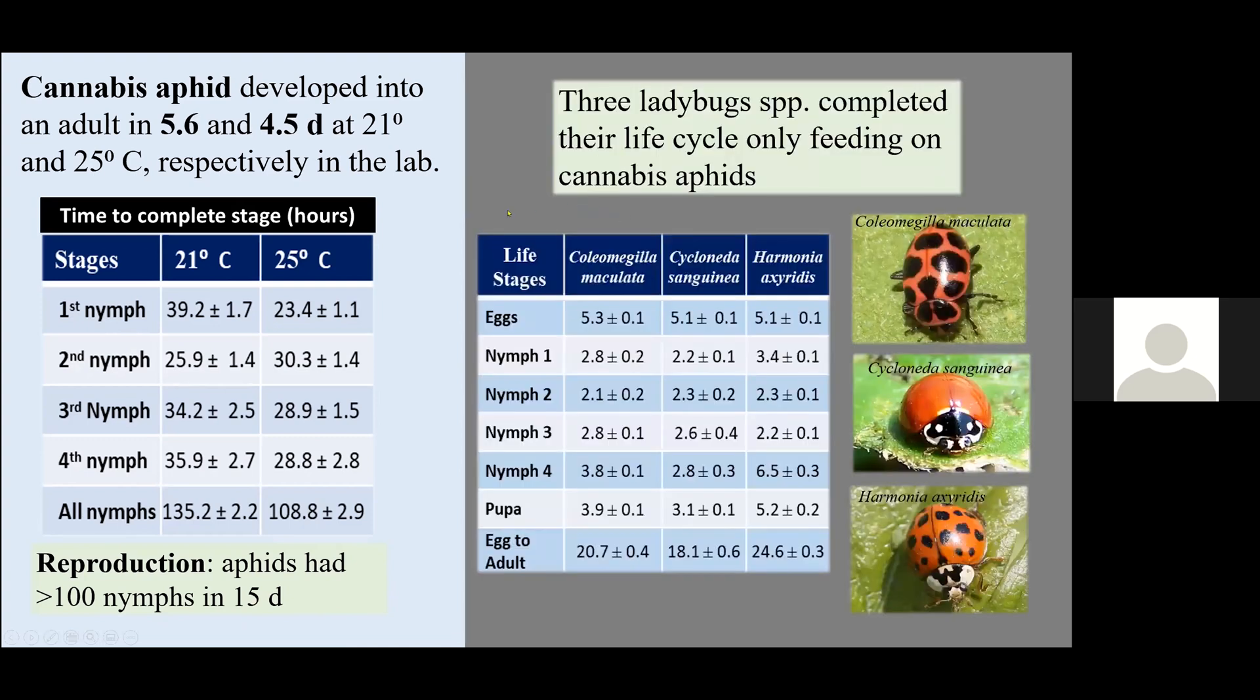We tested some natural enemies on how they can complete the life cycle, only feeding on these aphids. We have Coleomegilla maculata. This is the pink lady beetle, very common here in western Kentucky. Cycloneda sanguinea and Harmonia axyridis. This is the Asian lady beetle. All of them were able to complete the life cycle only on this diet. We didn't check reproduction, but they were able to lay some eggs.